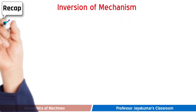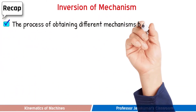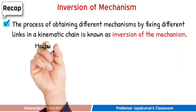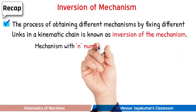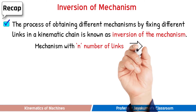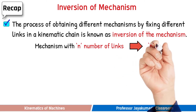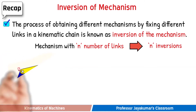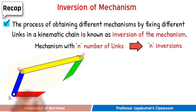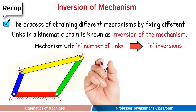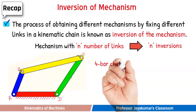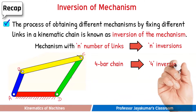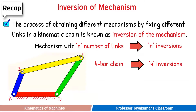What is meant by the term inversion? It is the process of obtaining different mechanisms by fixing different links in a kinematic chain. For example, a kinematic chain having 4 links can produce 4 different mechanisms by fixing its different links one at a time.